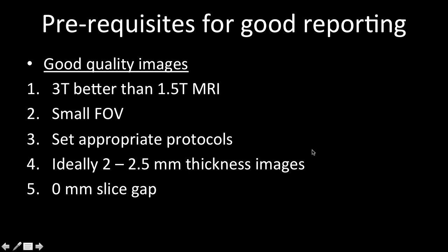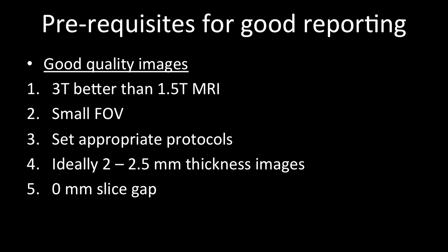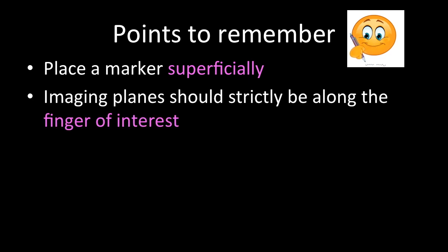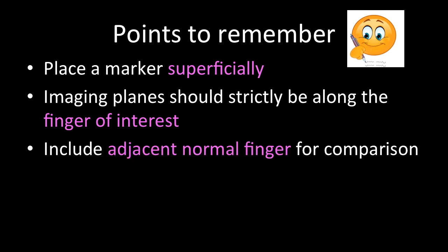To obtain good quality images, a 3 tesla MRI is better than 1.5 tesla. Please get small FOV images, as identifying small structures with large FOV is very difficult. Call your application specialist and set appropriate protocols. Ideally obtain 2 to 2.5 millimeter thickness images; up to 3 millimeters is still acceptable. Beyond that — 4 or 5 millimeter thickness — you will miss the thin structures of the fingers. Use zero millimeter slice gap so you don't miss anything. Key points: place the marker superficially, imaging planes must be along the finger of interest, and include an adjacent normal finger for comparison.